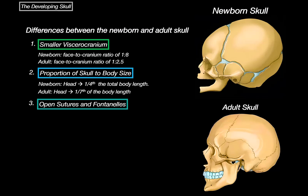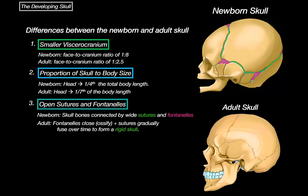Now the third and final difference: open sutures and fontanelles. In the newborn skull, the bones are connected by wide sutures and fontanelles, which are flexible, fibrous areas that allow movement and growth. In the adult skull, the fontanelles eventually ossify — they turn into bone and close off. At the same time, the sutures gradually fuse and lock the skull into a rigid structure.